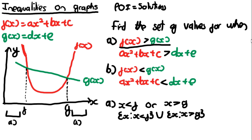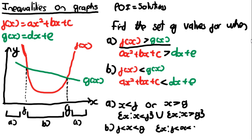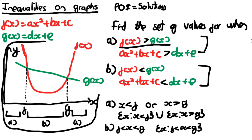For part b, where f(x) < g(x), the g(x) line is above the f(x) line only in the region between the two intersection points. So f(x) < g(x) when f < x < g. In set notation: {x : f < x < g}. This is what makes the graphical method so useful — if given a graph, you can quickly identify the inequalities, understanding graphically what they actually represent.